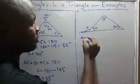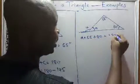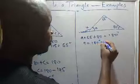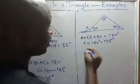So A plus 55 plus 80 gives you 180 degree. So A gives you 180 degree minus, the sum of this is 135 degree. So A should give you 45 degree.